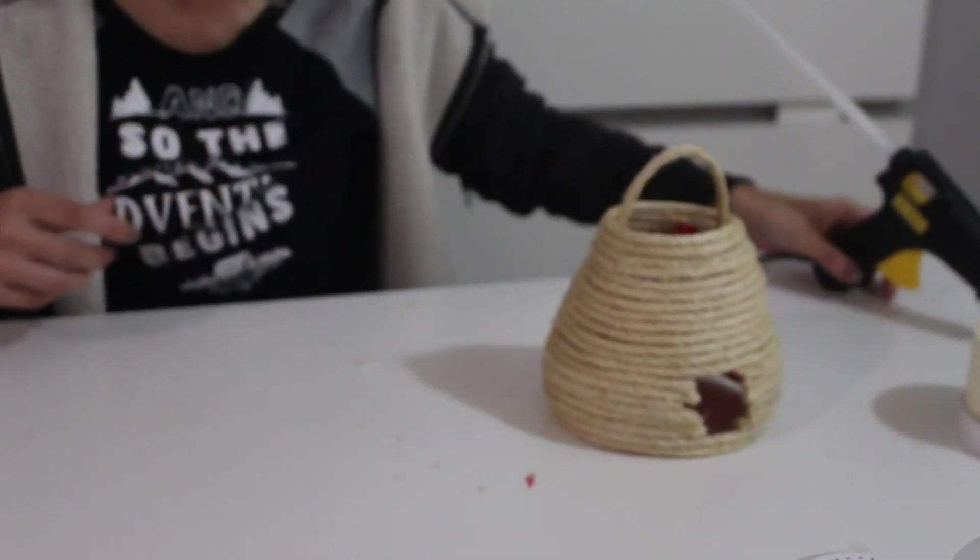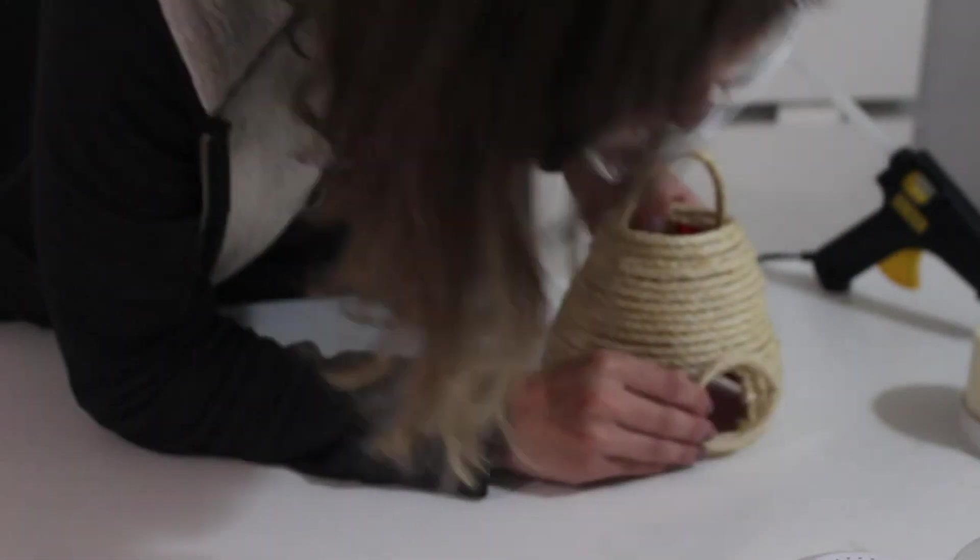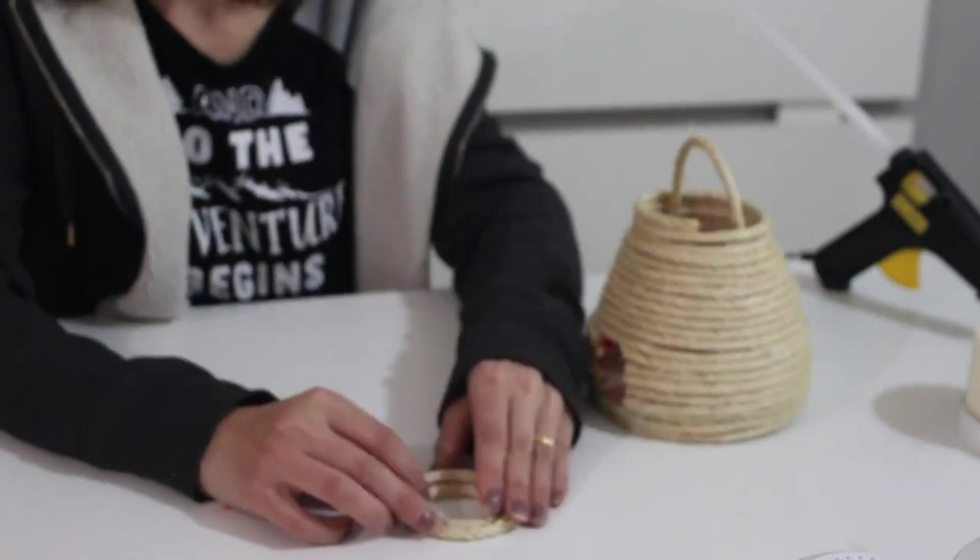You just need to paint the inside of your circle entrance black and it will look super cute. So you don't necessarily need to cut it out the way that I did. If you paint it, it will be even more practical and simple.